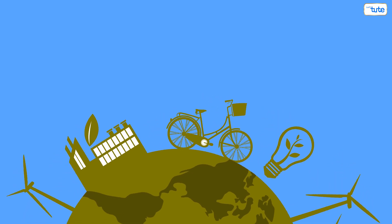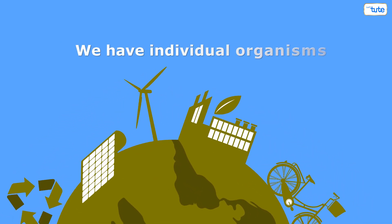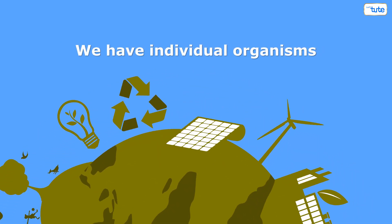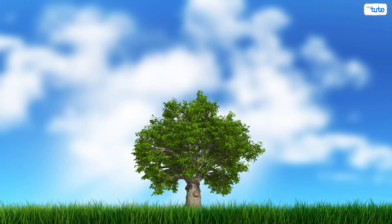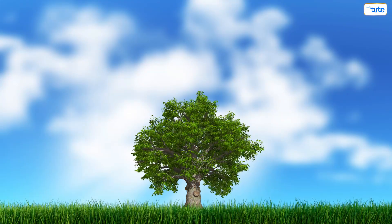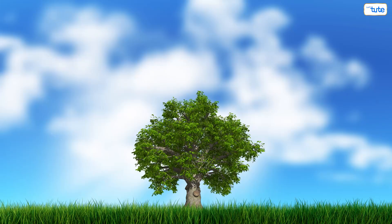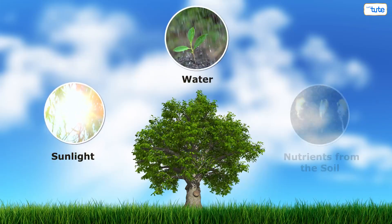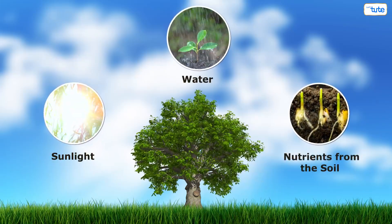Ecology can be studied at different levels. First up, we have individual organisms. Think of a single tree in this park. That tree has its own little world — it needs sunlight, water, and nutrients from the soil to survive.